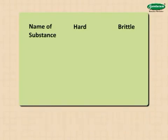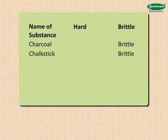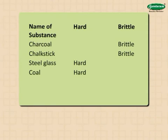Now, let us classify the aforementioned items as hard and brittle. Charcoal is a brittle substance. Chalk stick is a brittle substance. Steel glass is a hard substance. Coal is a hard substance. Wood is a hard substance.